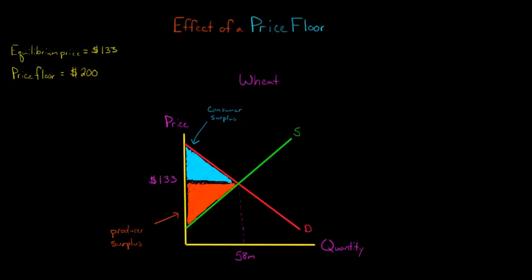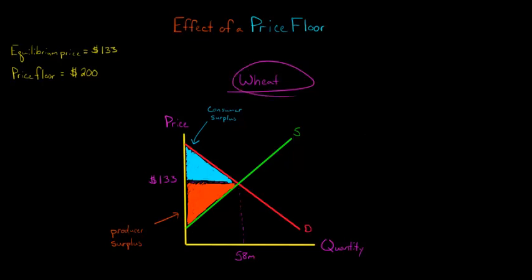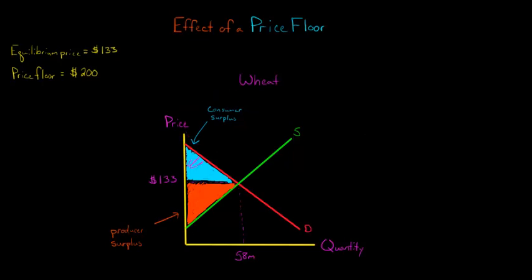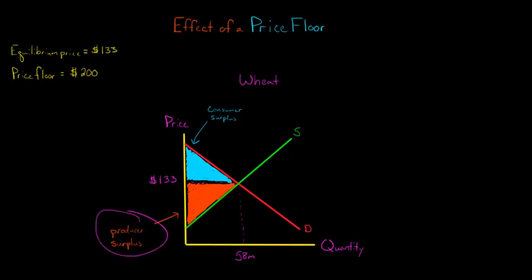In this video we're going to discuss the effect of a price floor. Let's take the market for wheat as an example. I've drawn a downward sloping demand curve and an upward sloping supply curve. Before the effect of any price floor, the consumer surplus is this blue triangle here, and this orange triangle is the producer surplus.